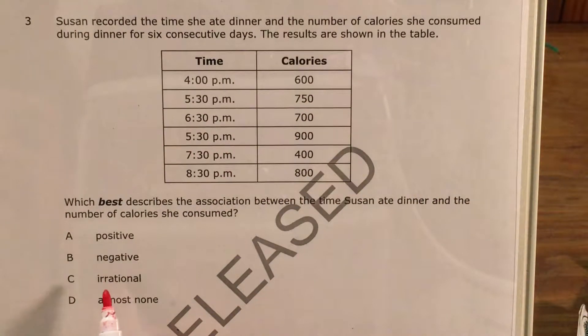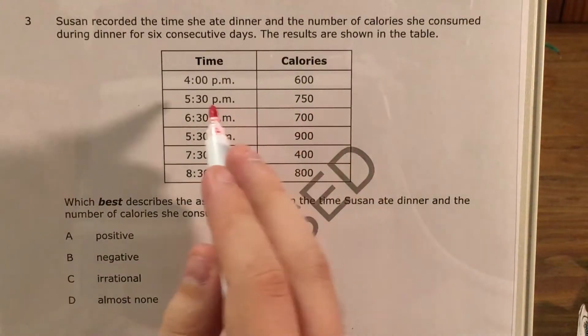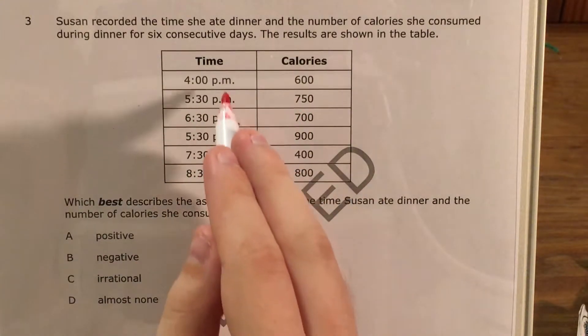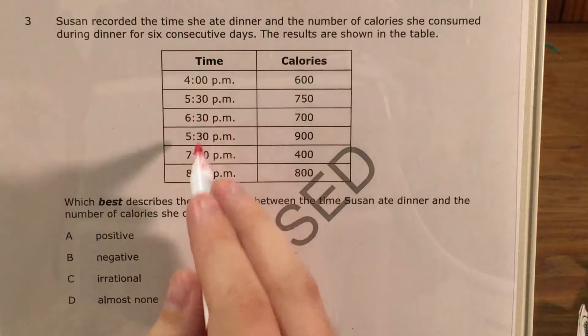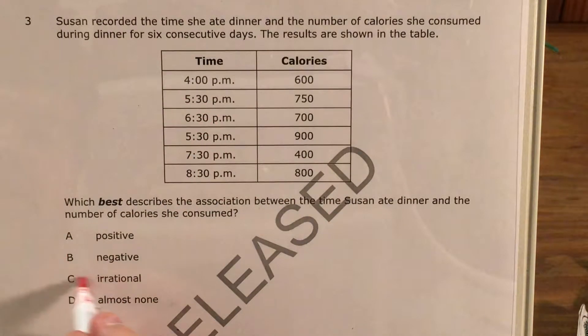Irrational doesn't even make sense in this context. Almost none means that we can't find any association. And I'll talk about what our points on a graph would look like for each of A, B, and D, but let's just go ahead and say right now that it's not choice C.